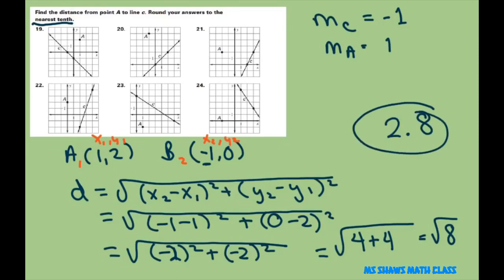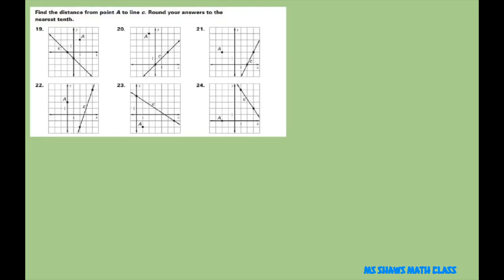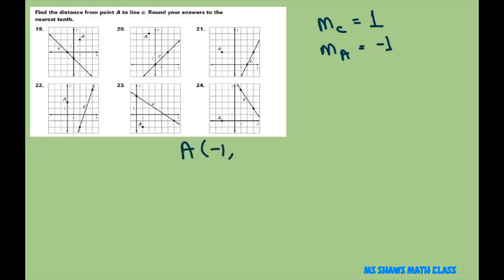Alright, so that's how it goes. Now let's look at number 20 — you can kind of guess what the perpendicular line is. The slope of this C line is 1, so we want the slope of A to be negative 1 to be perpendicular. That means we're going down through this point right here. Your point A is negative 1 comma 5, and your point B is 2 comma 2. Then use your distance formula. The answer for this one should be 4.2.